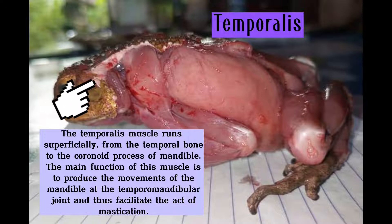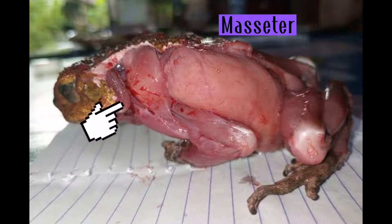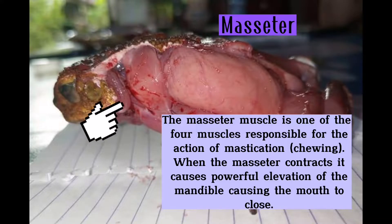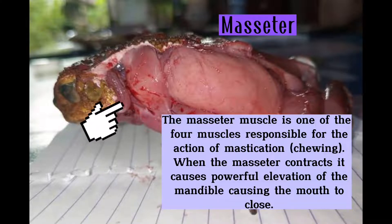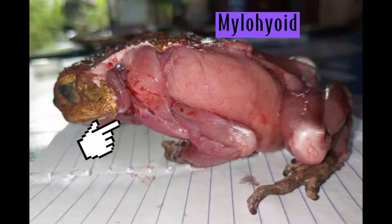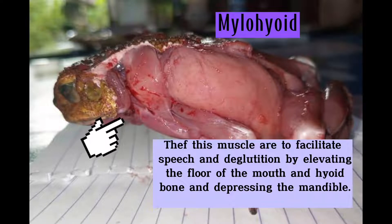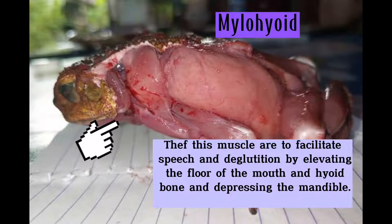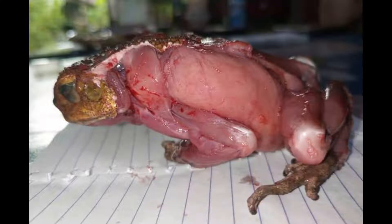The temporalis thus facilitates the act of mastication. The masseter muscle is one of the four muscles responsible for the action of mastication or chewing. When the masseter contracts, it causes powerful elevation of the mandibule, causing the mouth to close. The mylohyoid muscle facilitates deglutition by elevating the floor of the mouth and the hyoid bone and depressing the mandibule.